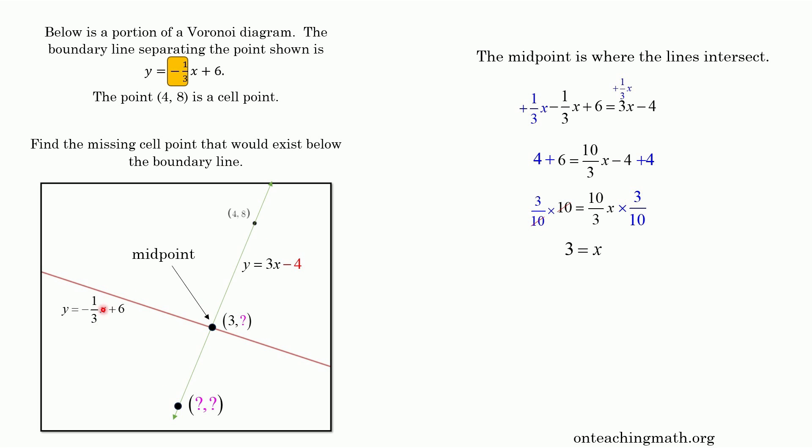So the x-coordinate where these two cross is 3. So now I just take that 3, plug it into either equation and I can figure out what the y is. So I'm going to go ahead and plug it into the one we have, negative 1 third x plus 6. Plugging in the 3. 1 third of 3 is 1. So negative 1 plus 6 is 5. These two lines cross at 3, 5. So that's a key piece of information because 3, 5 is the midpoint. It's the halfway distance from 4, 8 to the thing we don't know.